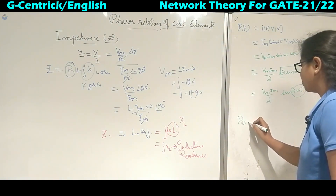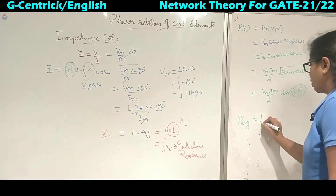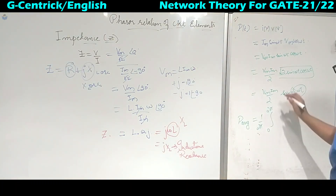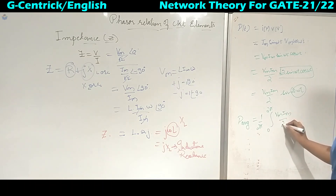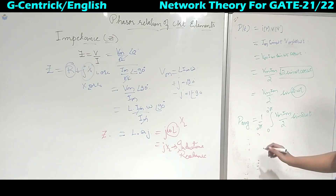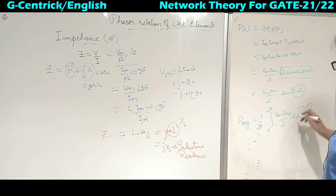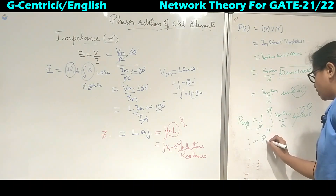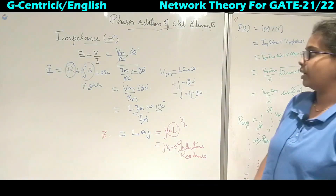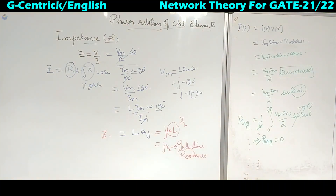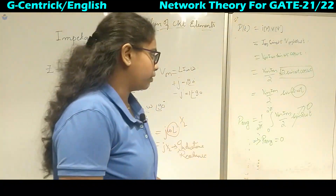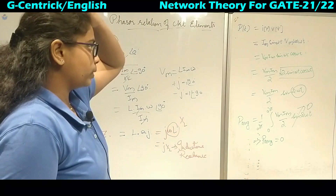To find the average power, we integrate over one time period 2π. Substituting sin 2ωt over a full cycle, the result is zero. Therefore, the average power P_avg = 0 watts for an inductor. This means the inductor dissipates no active or useful power.